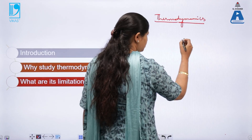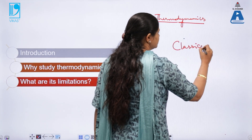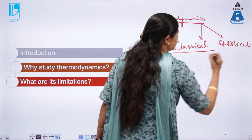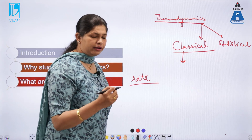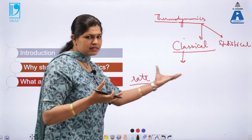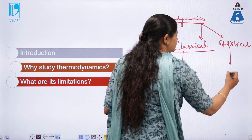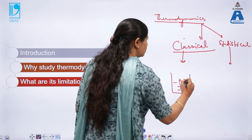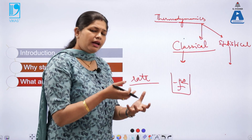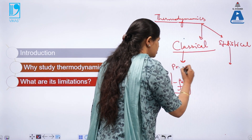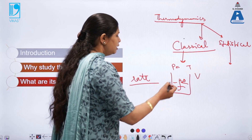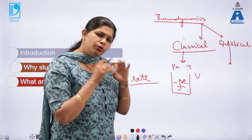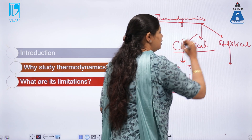In today's lecture, we will focus on classical thermodynamics. There are two branches of thermodynamics: classical and statistical. Classical thermodynamics talks about the bulk of matter — we consider the state of a system at a macroscopic level. Whereas in statistical thermodynamics, we deal at the microscopic level. For example, if I have a beaker of water, classical thermodynamics looks at the pressure, temperature, and volume of the system, but does not look at the molecular level — what is the bond length of water or what are the bond parameters. So we will focus only on classical thermodynamics.